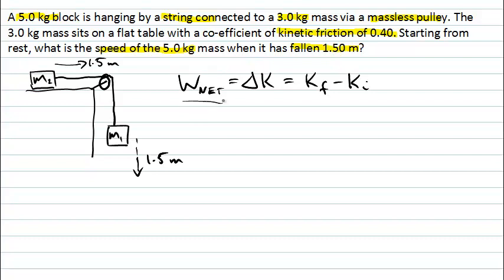To find the net work, we think about the work done by all forces. The system we consider is the combination of M1 and M2 joined by the string. One advantage of this is that we don't have to worry about the forces on the masses by the string — that's a force internal to the system, and internal forces do no work on the system, just as you can't lift yourself by pulling up on your own feet.